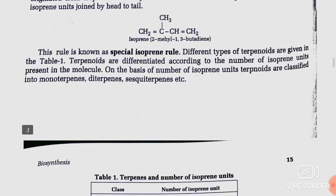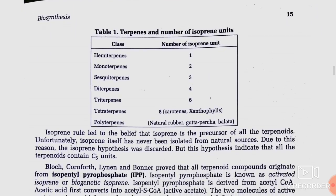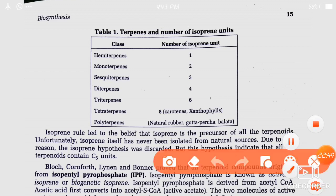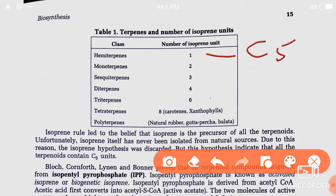Now, the list of terpenes and number of isoprene units: first, hemiterpenes, with 1 isoprene unit, denoted as C5. Then monoterpenes at C10. Sesquiterpenes at C15.